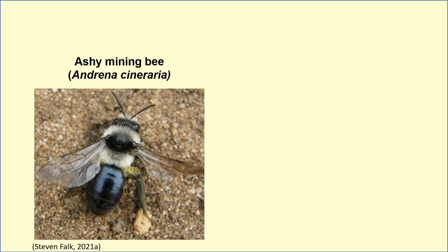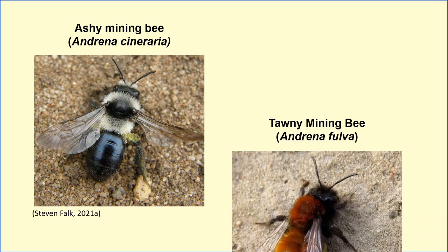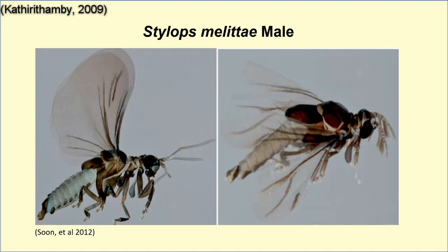For example, the ashy mining bee or Andrena cineraria, and the tawny mining bee Andrena fulva. The order Strepsiptera show an incredible amount of sexual dimorphism, gaining their common name of the twisted wing flies due to the intricate designs of the wings of the free-living males.